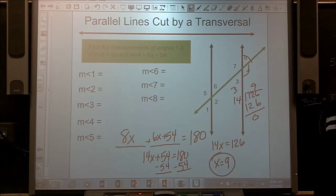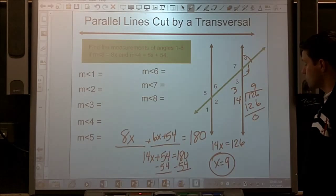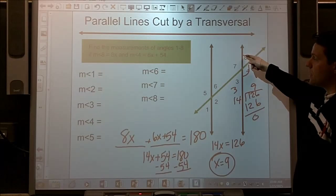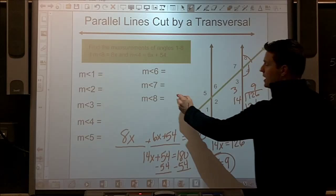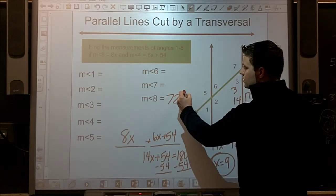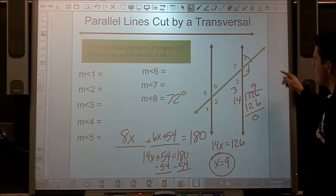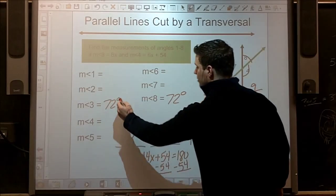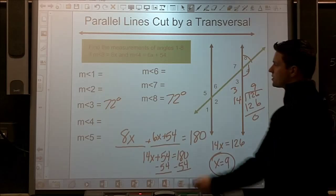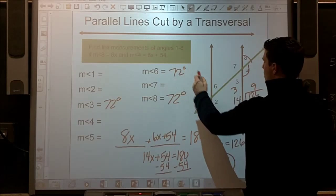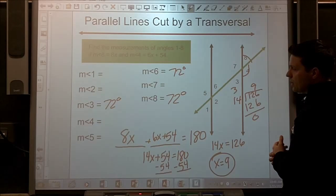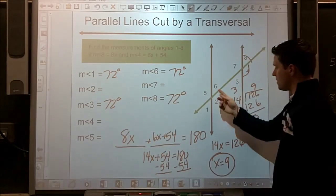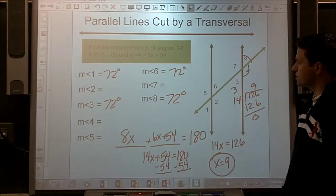Still trying to find all of the measurements, though. So, if x is 9, 8 times 9 is going to make angle 8 72 degrees. Who else is 72? Angle 3 is going to be 72. They're vertical. Angle 6 is going to be 72. They are alternate interior. Angle 1 is going to be 72, because that is also vertical to angle 6.